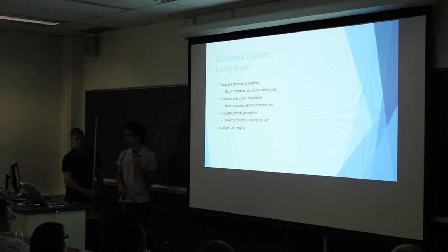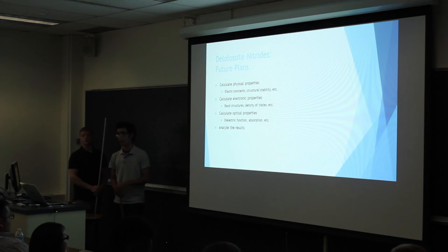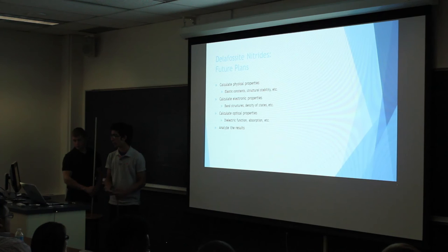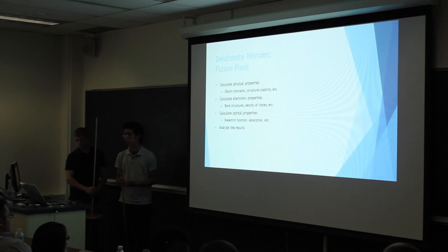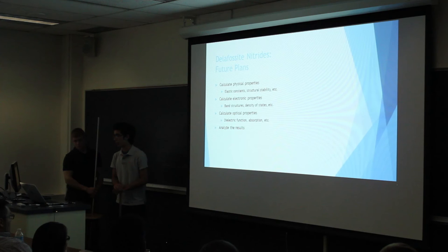Moving forward, all I have right now are just the structural parameters. The next steps are to look at the physical properties — elastic constants and structural stability. After that we can calculate the electronic properties: band structures, density of states, and finding the band gap. Then last, we want to find the optical properties — the dielectric function and finding that absorption onset and comparing it to the band gap. And last but not least, we want to analyze the results and figure out the interesting parts of our collected data.